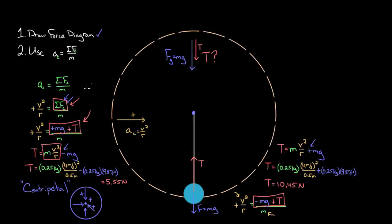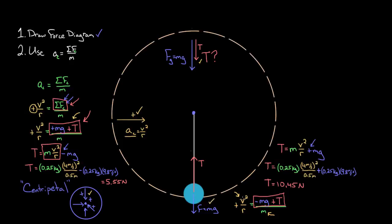Recap: when solving centripetal force problems, write v squared over r as a positive acceleration on the left-hand side. By doing that, you've selected inward toward the center of the circle as positive, which means all forces directed inward are also positive. Be careful — downward forces can count as positive centripetal forces as long as down corresponds to toward the center. And just because a force was positive at one portion of the trip doesn't mean it will be positive at another point during the motion.